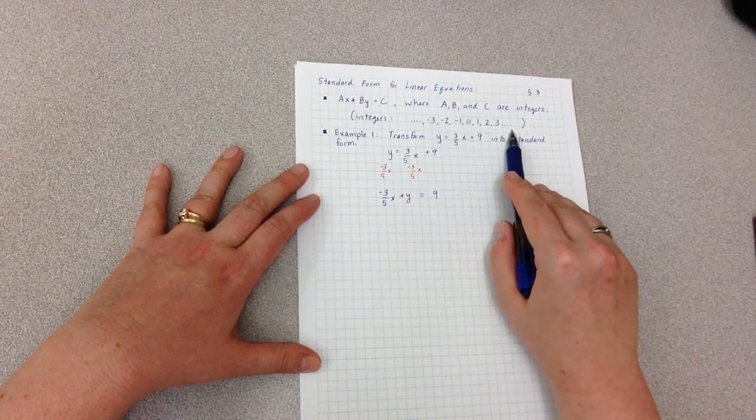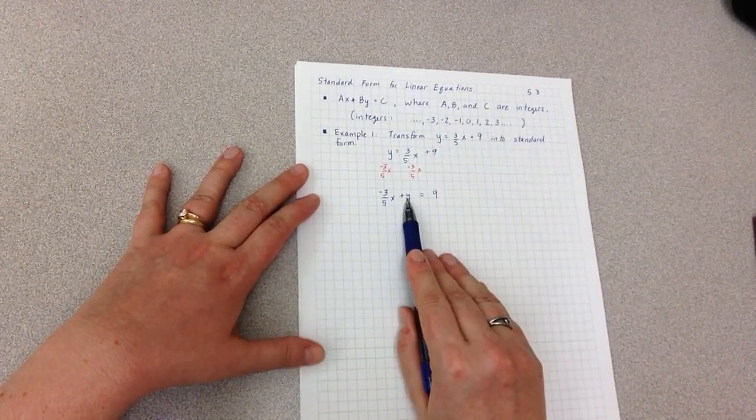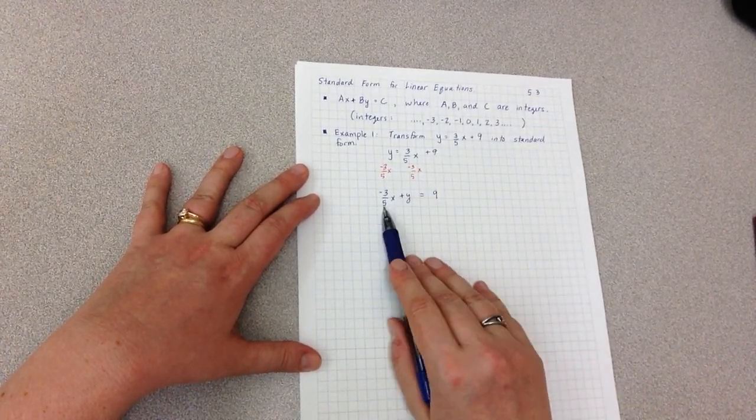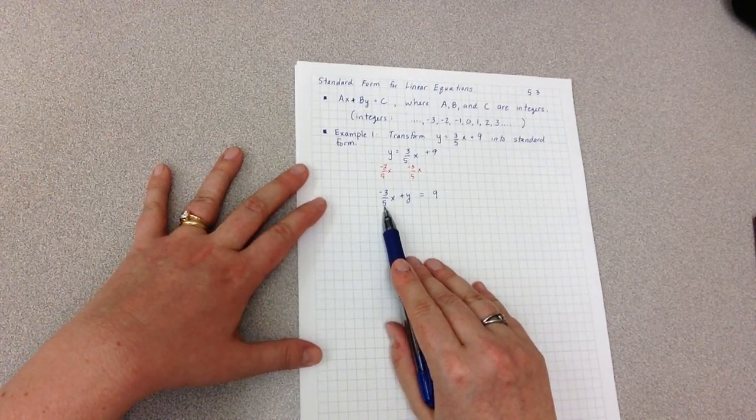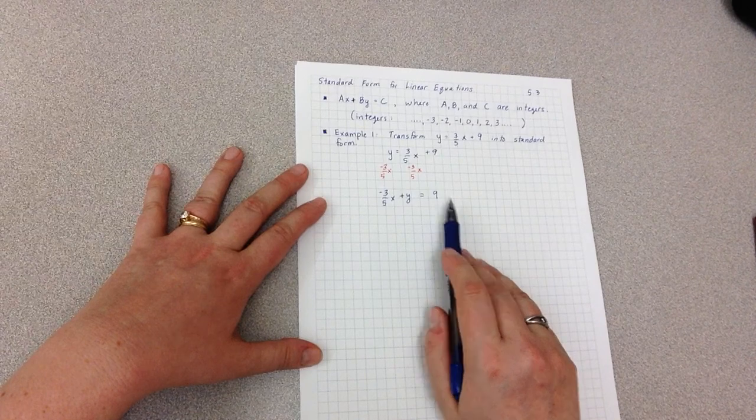They have to all be numbers that look like this. Well, 1 is an integer, 9 is an integer, but negative 3/5 is not. So in order to get this to be an integer, I'm going to need to get rid of the denominator here, this 5.